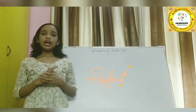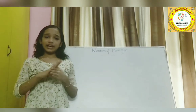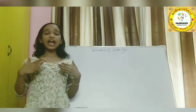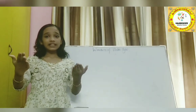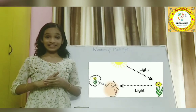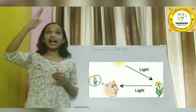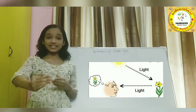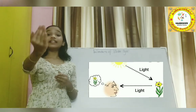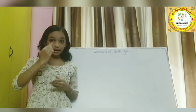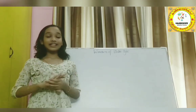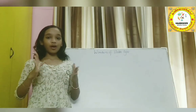Can you say how did we see an object? Yes — when light falls on the object, it is reflected into our eyes. Then we can see the object.